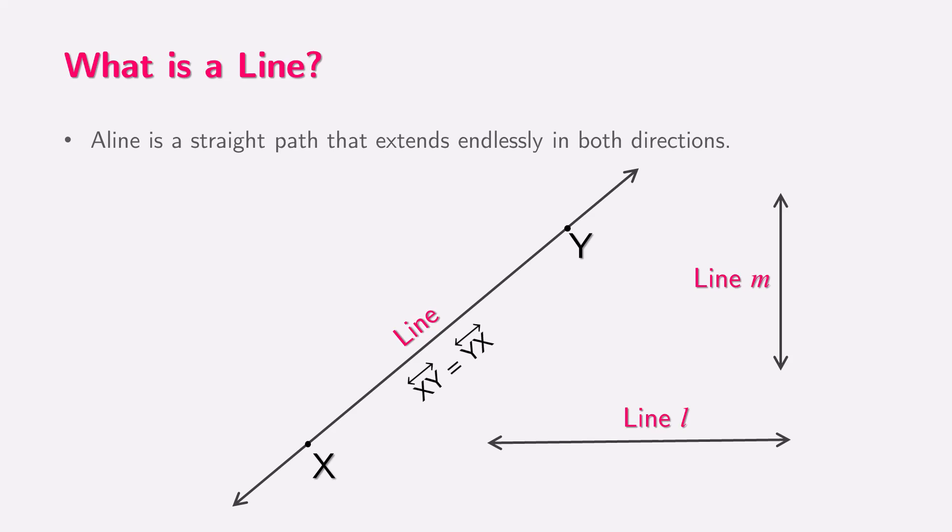Let's dive into an exciting concept in geometry: the line. A line is quite different from a line segment. While a segment has two clear endpoints, a line stretches out infinitely in both directions without ever stopping. Imagine this: if you draw a line through two points, say X and Y, and let your imagination soar as it continues forever, you've just created a line.